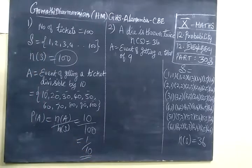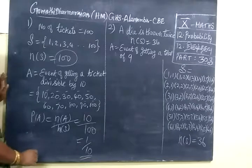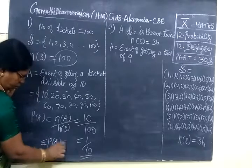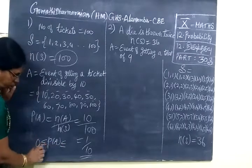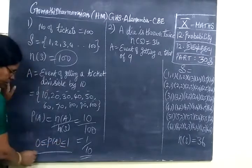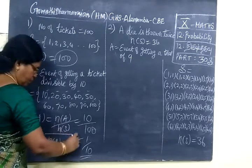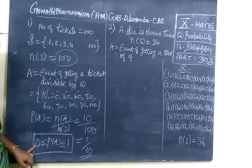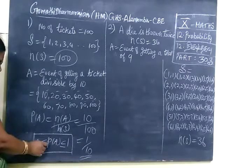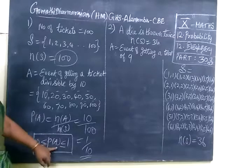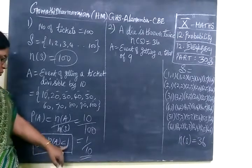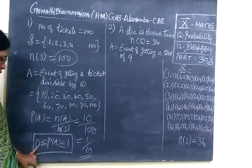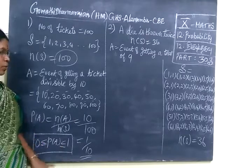And it is noted that probability always lies, P(A), 0 less than or equal to P(A) less than or equal to 1. This means maximum value of probability is 1 and minimum value is 0 and no negative value for probability. P(A) has no negative value. Its maximum value is 1 and minimum value is 0 and the value lies between or equal to 0 and 1.